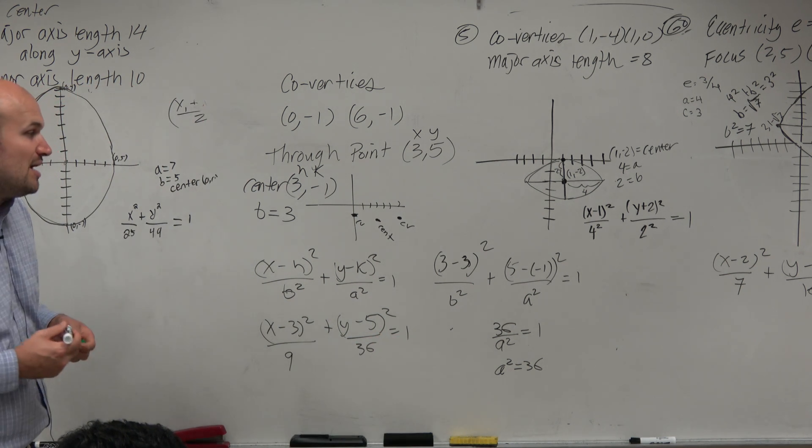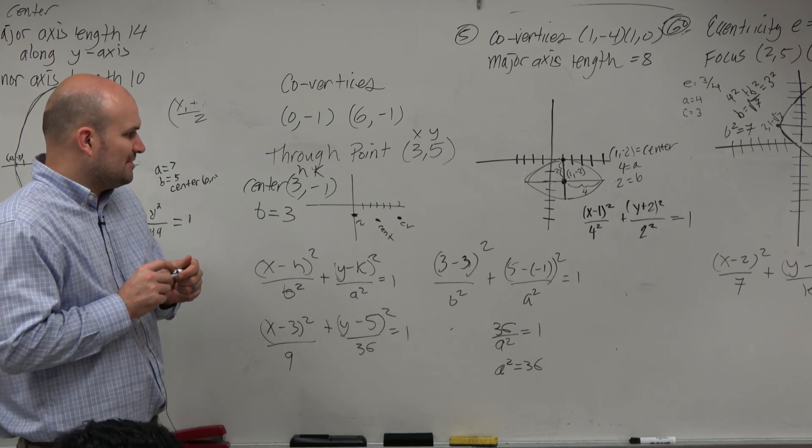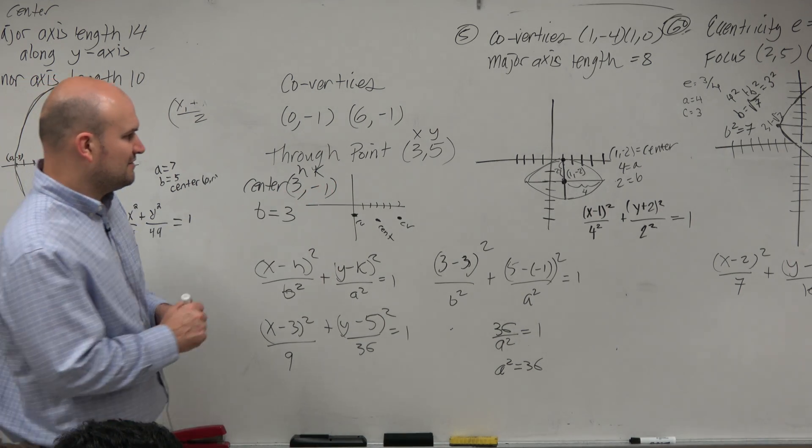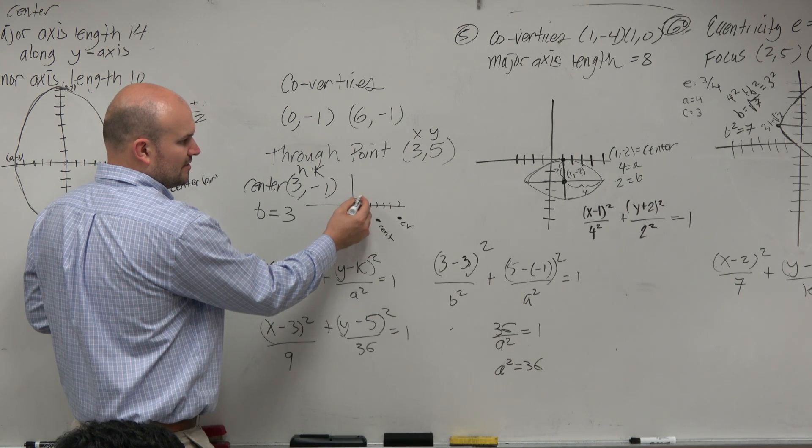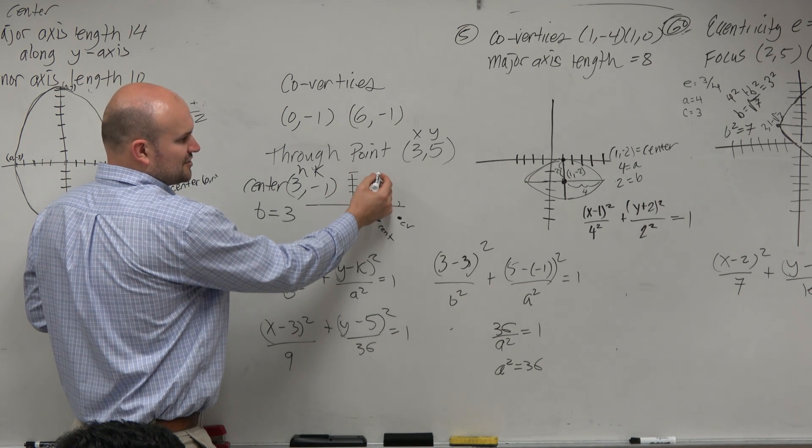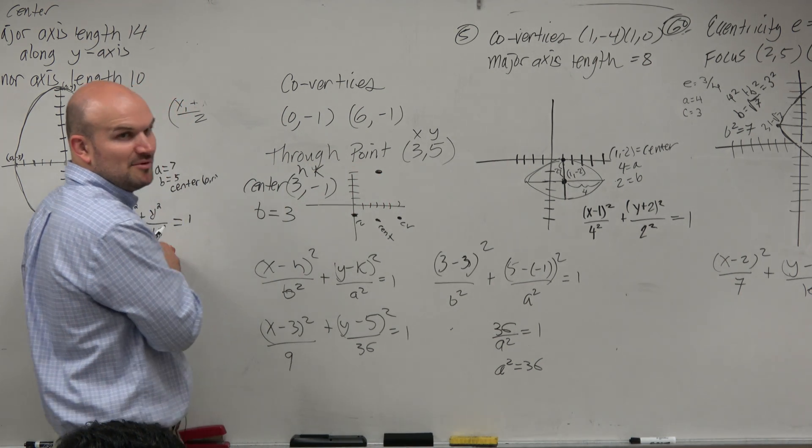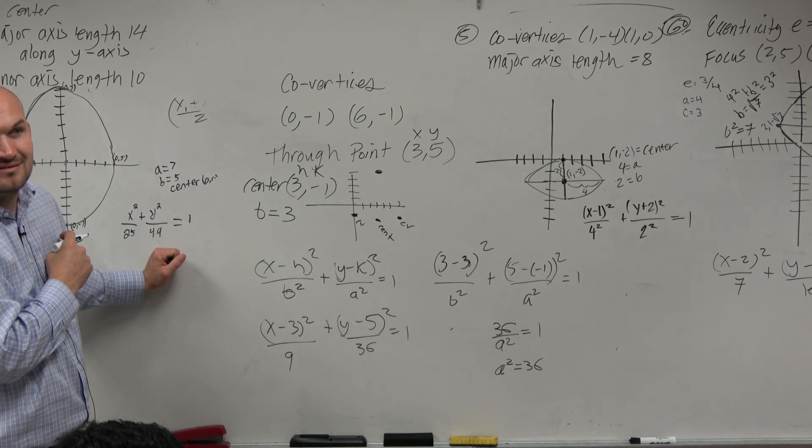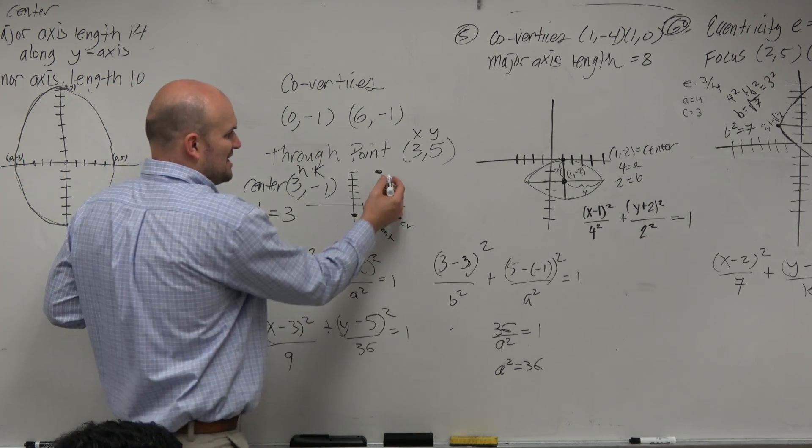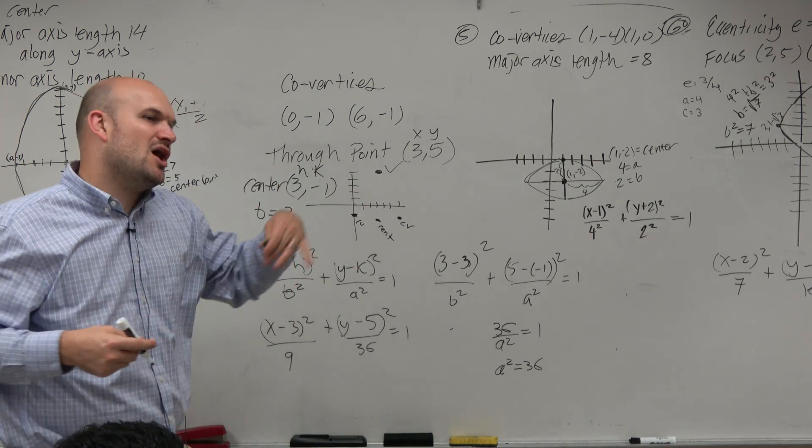Now, the reason why I gave you guys an easy problem is, again, I wanted you to follow this process. But the reason why this one's relatively simple is because look at where my point is. Where is actually my point? What actually is the name of my point? It's actually a vertice, right?